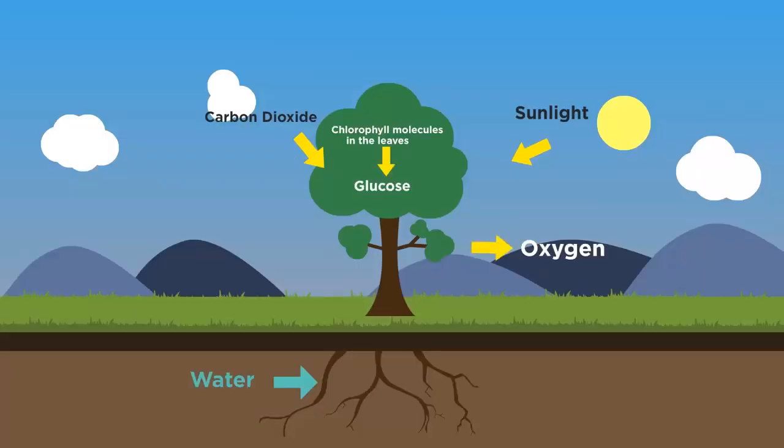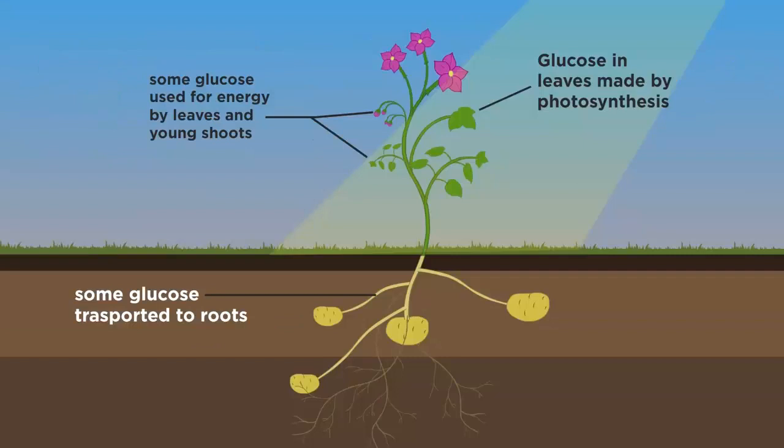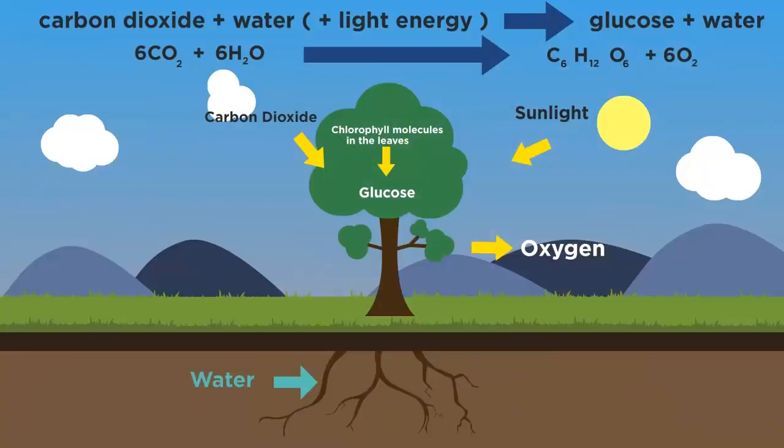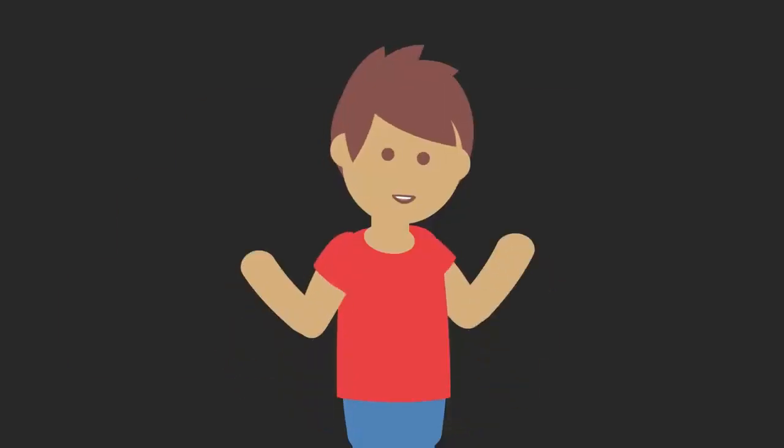Glucose and oxygen are made. Some of the glucose is used for respiration and some is converted into insoluble starch. This can then be stored and turned back into glucose at a later stage. Oxygen is actually just a byproduct of photosynthesis.